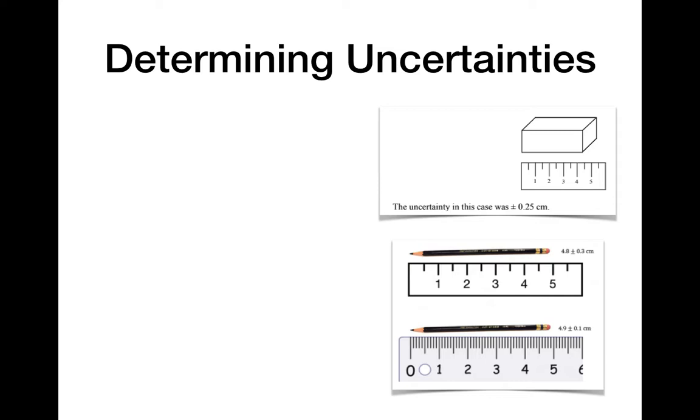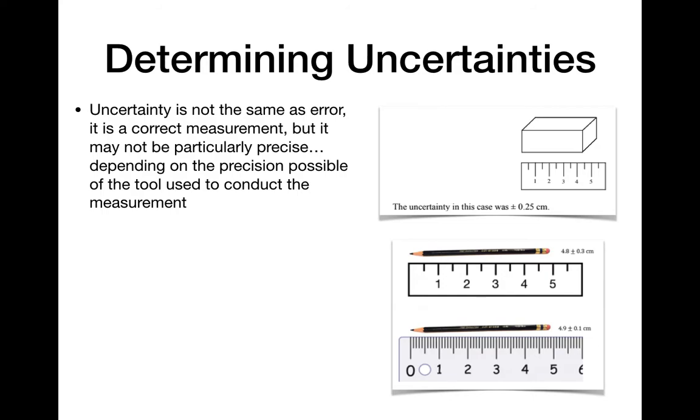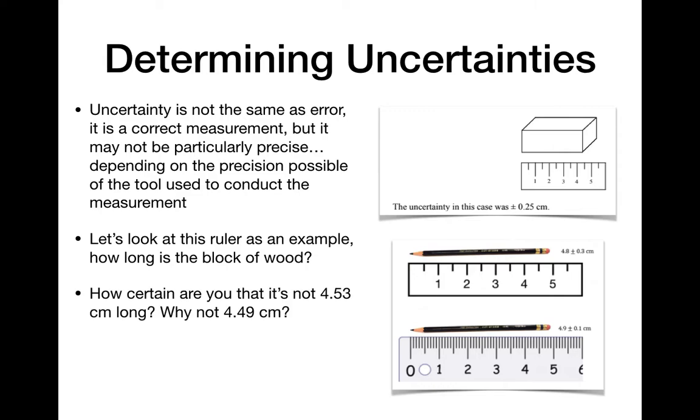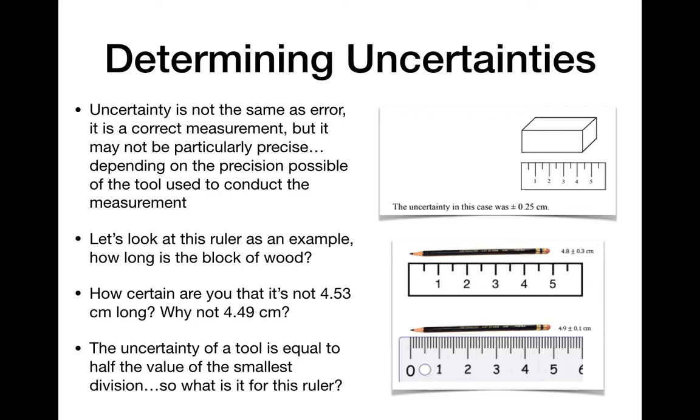And you have to talk about uncertainty. So uncertainty is not error. If you are uncertain, you've made a correct measurement, but maybe it's not as precise as it could possibly be. And the precision of measurement is often limited by the tool you're actually using and the tool can be limited by what's available to you in the lab or at home. So for example, here's a ruler, here's a block of wood, how long is that block of wood? Well, I hope you got 4.5 centimeters, but how sure are you that it's not like 4.53 centimeters or 4.49 centimeters? How sure are we that it's exactly 4.5? Well, we're not that certain and the uncertainty for this particular ruler is 0.25 centimeters.